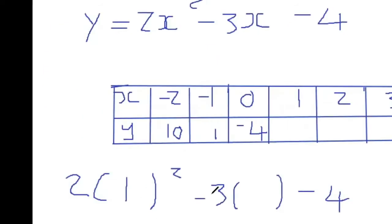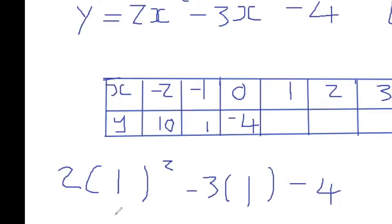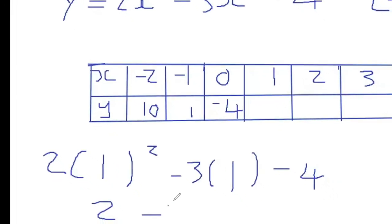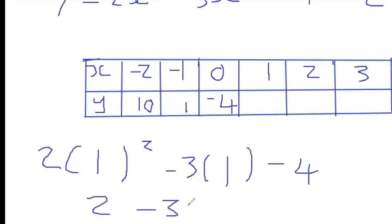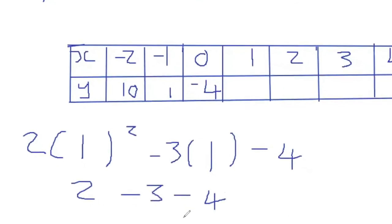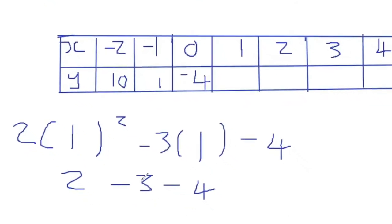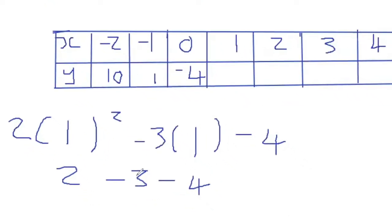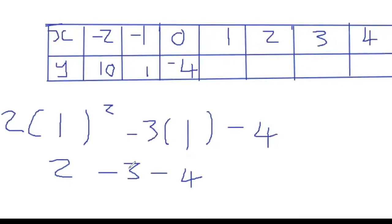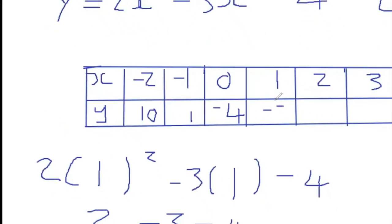The next number is when x equals 1. One squared is 1, times 2 is 2. Negative 3 times 1 is negative 3, minus 4. So calculating this: 2 minus 3 is negative 1, minus 4 gives us negative 5.